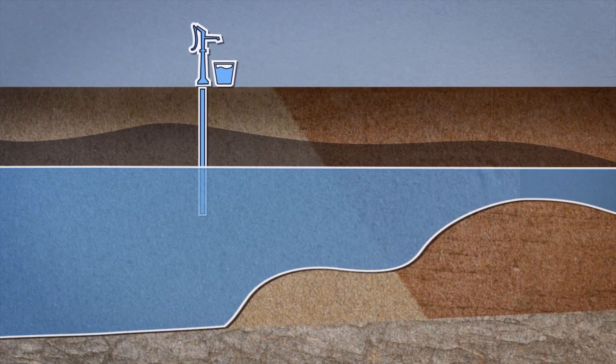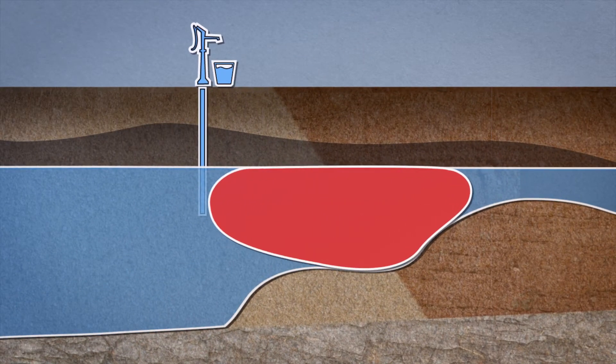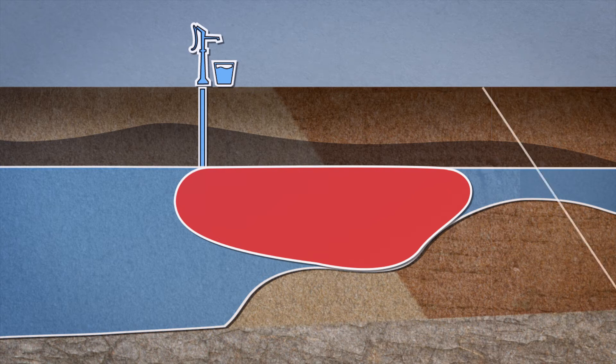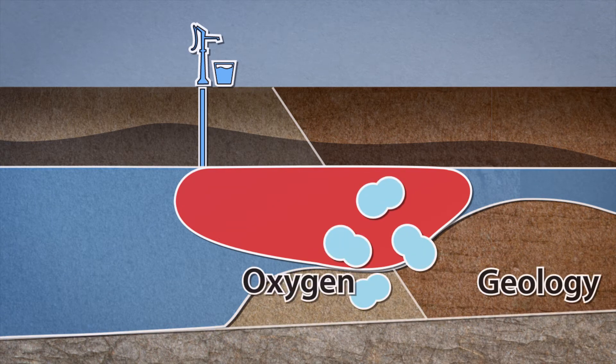Under certain conditions, groundwater can also become contaminated naturally. A few of the factors involved include geology, oxygen level, and pH value.